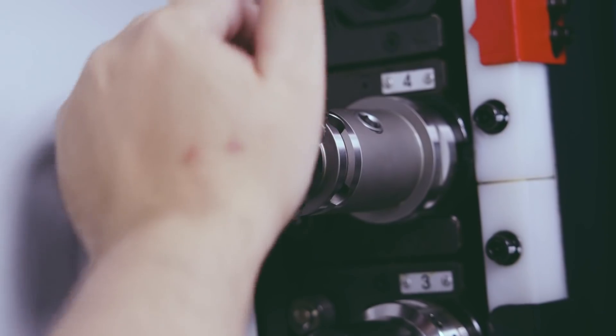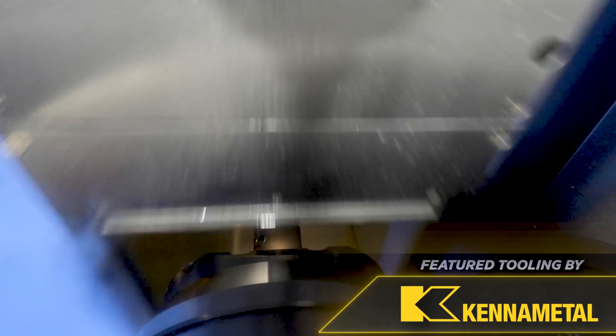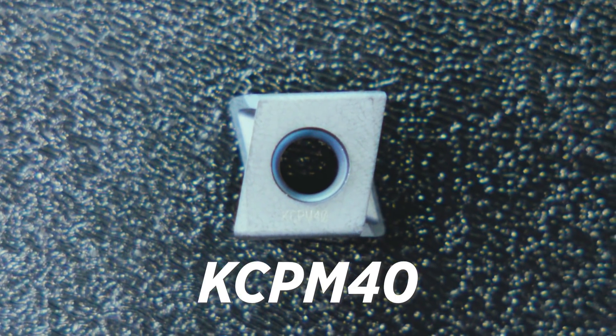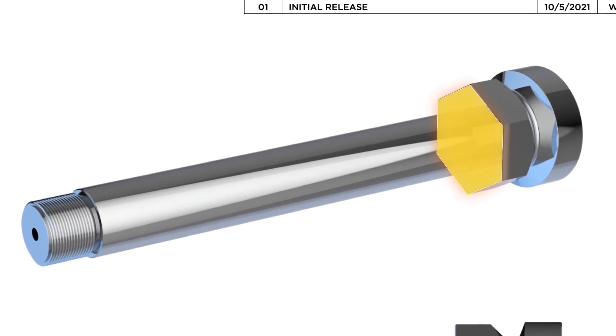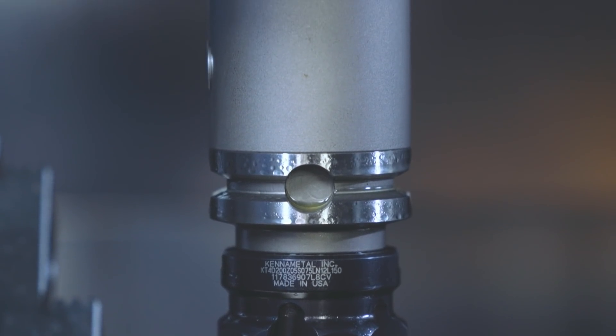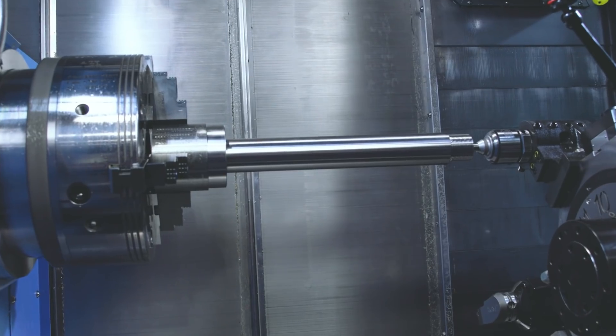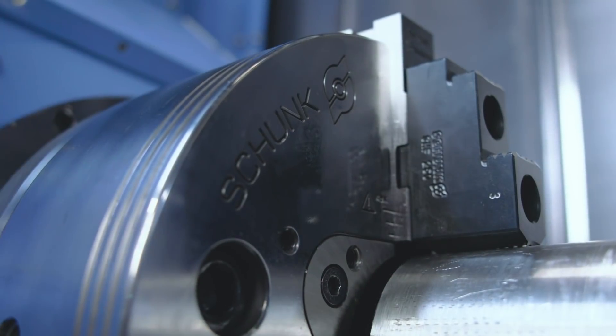The next tool up is the Kennametal Mill 4-12 KT shell mill. I have a KCPM 40 insert and I'm going to be using the shell mill to do the hex on the back of the part. I wanted to run this tool a lot more aggressive but because of the length the tool is sticking out and we needed the length so we had our clearances between the part and the chuck, I had to slow it down.